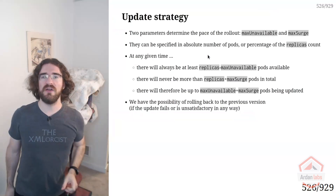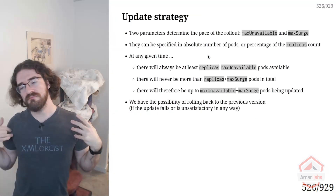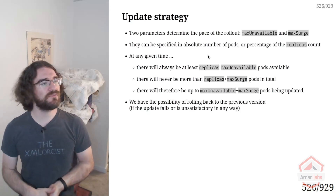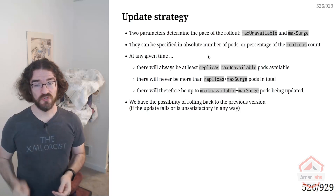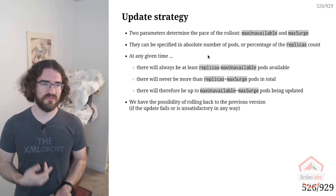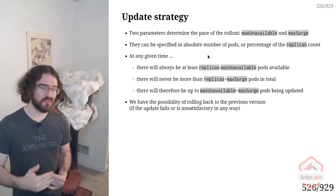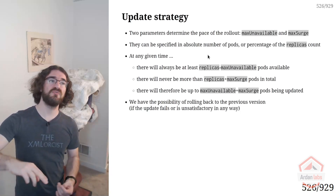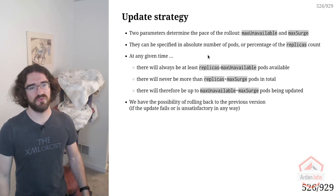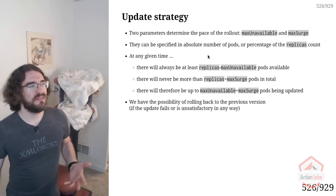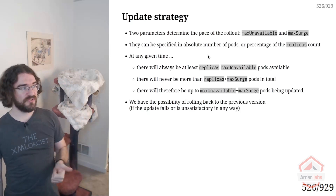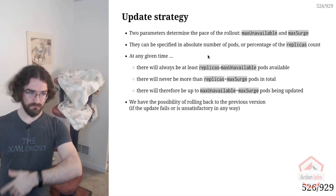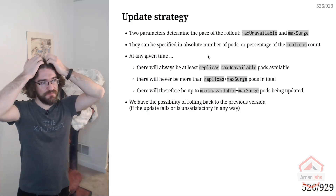Max surge works the other way around — it indicates how much extra resource we can use during a rolling update. If you put max surge at 25%, that value is rounded up. So if you have a deployment of size 10, during the rolling update you can have up to three extra pods. For both parameters, values can be set either as a percentage or as an absolute number of pods — for example, 20%, 50%, 100%, or three, five, seven, twenty pods.